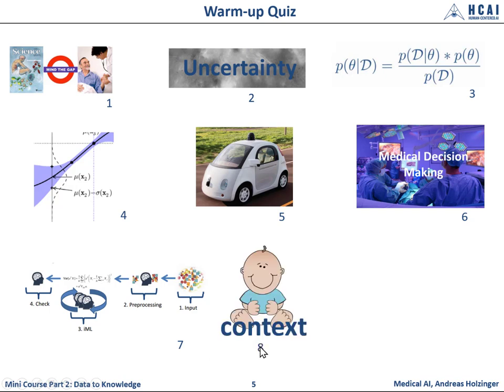Context is so important because problems are solved in a particular context, and we have to understand that context. Even small children have contextual understanding and are sometimes much better than our best algorithms. This sense-making is very, very important because the problem must be understood within its specific context.